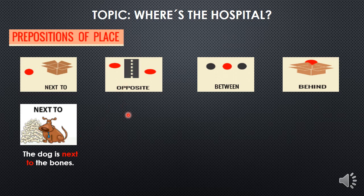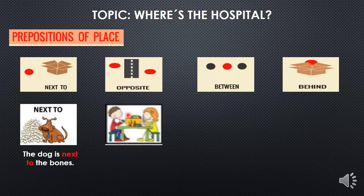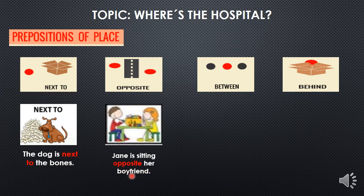Tenemos el siguiente ejemplo. Para opposite, tenemos una pareja que está frente a frente. La oración sería: Jane is sitting opposite her boyfriend. Jane está sentada al lado opuesto de su enamorado. Good.